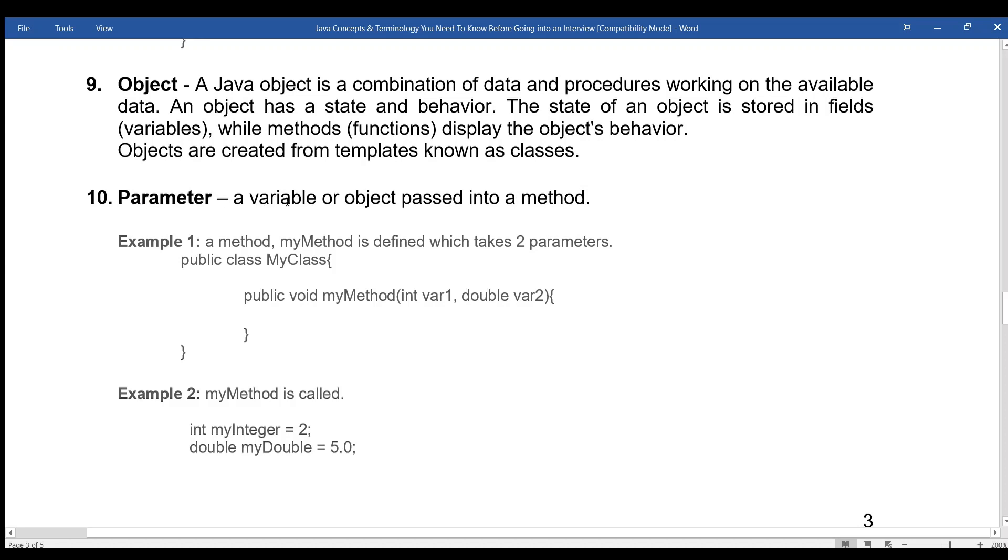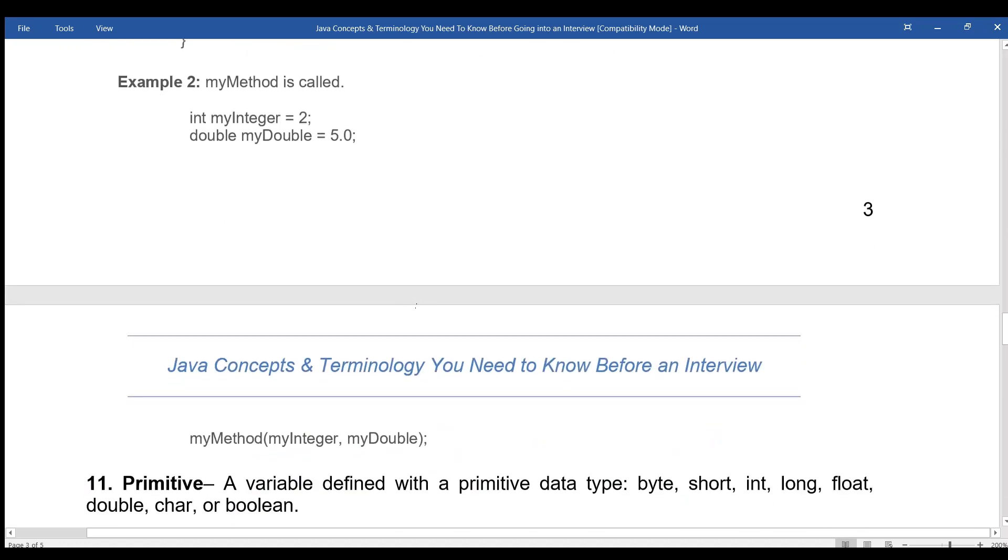Parameter: A variable or object passed into a method. Example 1: a method myMethod is defined which takes two parameters: public class MyClass, public void myMethod int var1, double var2. Example 2: myMethod is called: int myInteger equals 2, double myDouble equals 5.0, myMethod myInteger, myDouble.